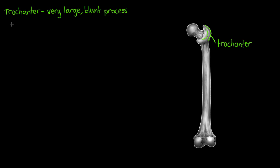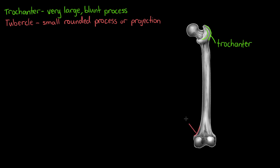Just a reminder that all of these bone markings are specifically attachment points for muscles and ligaments. The next bone marking is a tubercle — a much smaller and rounded muscle or ligament attachment point. The example we are using, again on the femur, is a very small border along the side called the adductor tubercle. Note that adductor is not named after a bone but after the muscle that attaches to it.